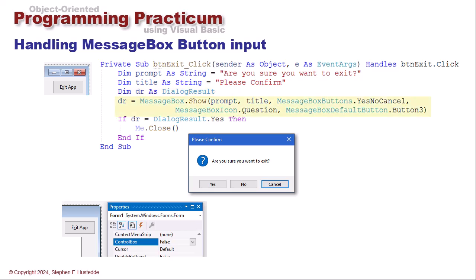We're going to show the prompt, the title, the yes, no cancel buttons, the question button, and we'll make the third one to cancel the default. I want the user to choose yes that they actually want to exit. That's why I made the third one the default.